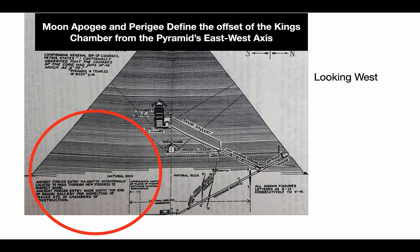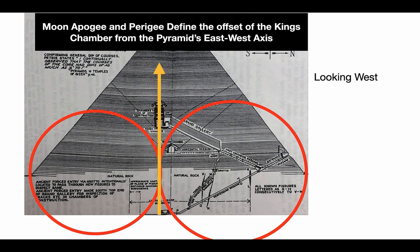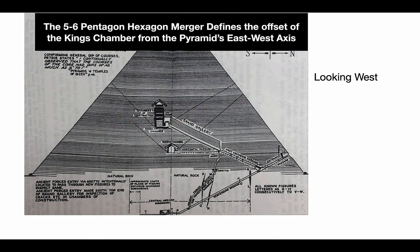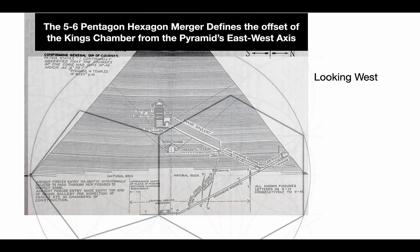There's apogee and there's perigee. Where they are tangent, it goes right through the sarcophagus, right through the relieving chambers, into the center of the gable of the King's Chamber. I just think that's so amazing.